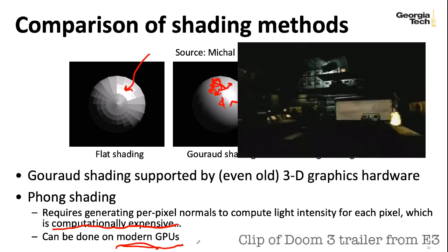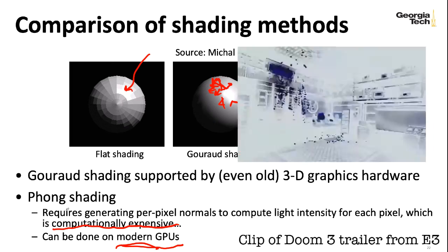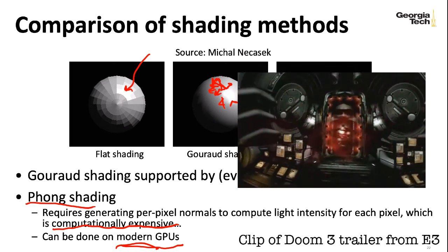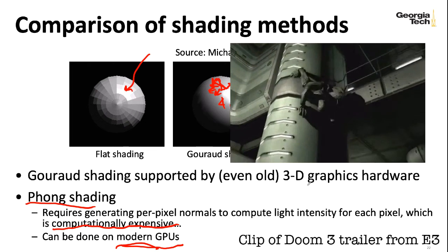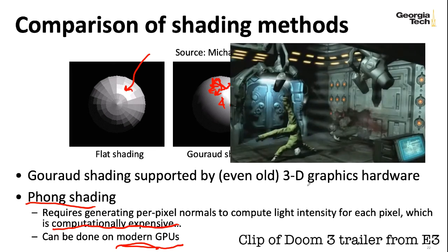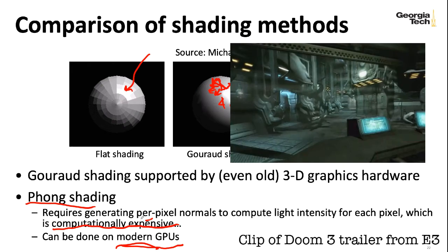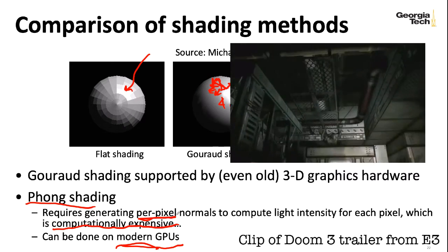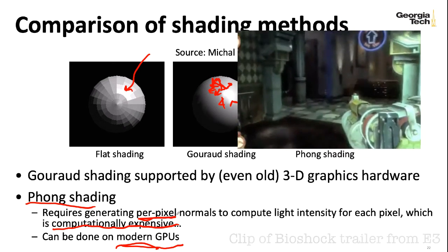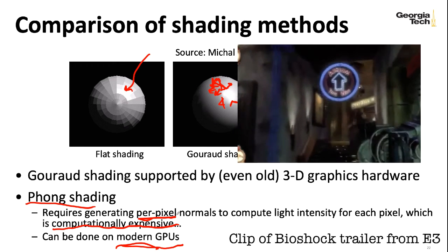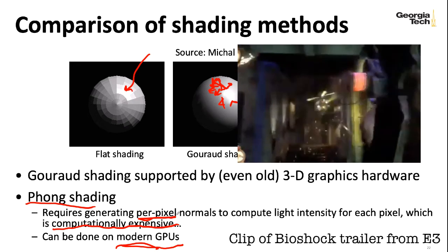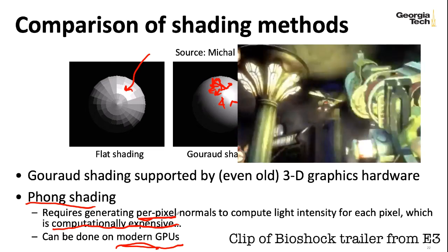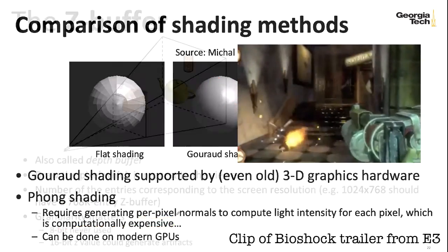The first game that I'm aware of that used extensive per pixel lighting, also known as Phong shading, is probably Doom 3. There might have been others, but I think Doom 3 really pushed this per pixel lighting idea. And now everything essentially uses this. This is a big deal. Unreal Engine 3 uses per pixel lighting. That's why Bioshock looks so awesome. But really, that's just the look of everything nowadays.